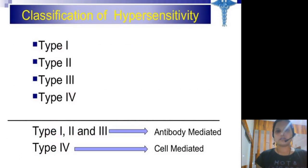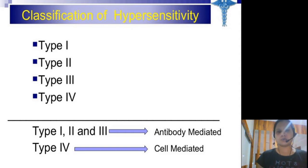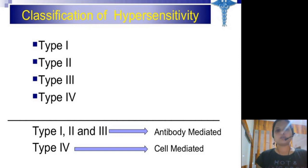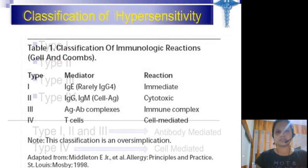There are 4 different types of hypersensitivity — type 1, 2, 3, and 4. Out of these, the first 3 are known as antibody-mediated and immediate type hypersensitivity, while type 4 is called cell-mediated or delayed type hypersensitivity.